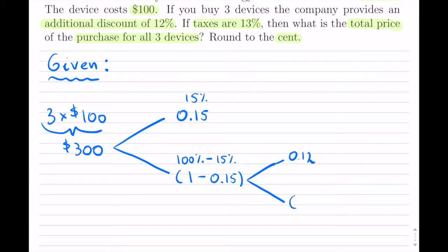I'm going to do exactly the same thing. So, 100% minus the 0.12. Now I have my first discount and my second discount.